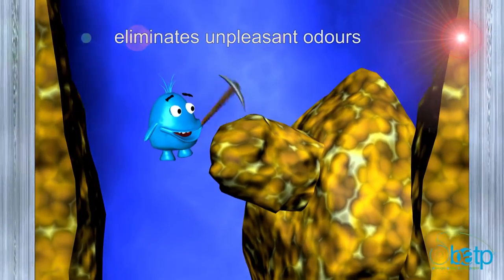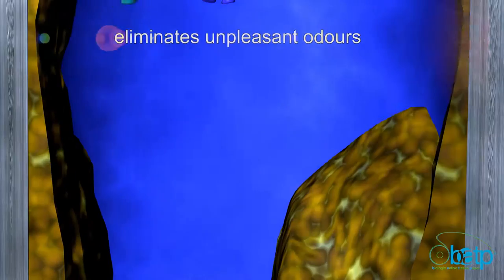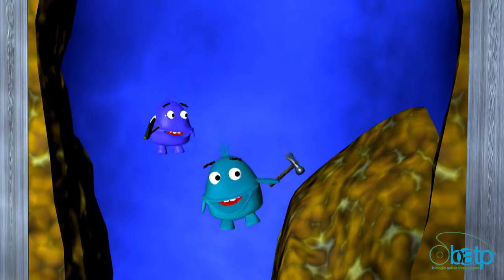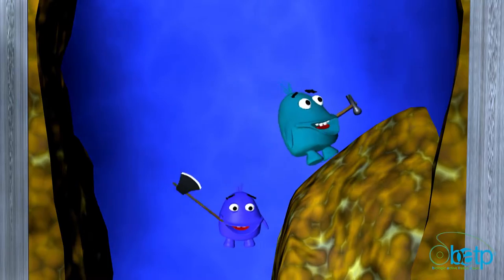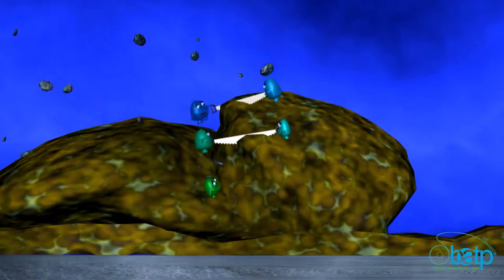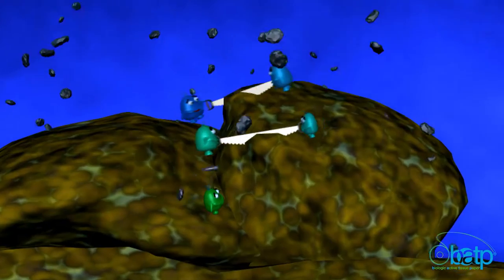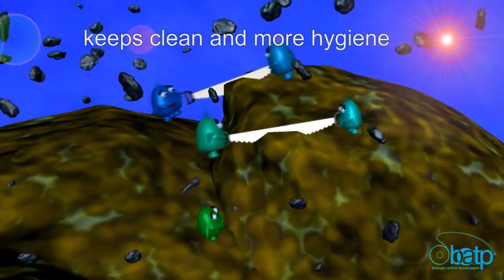Our bacteria form endospores. After coming into contact with water, these dormant structures start producing specific enzymes that degrade all organic material, releasing water and carbon dioxide.